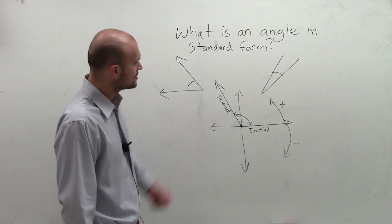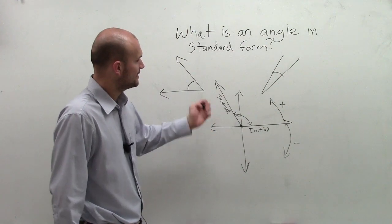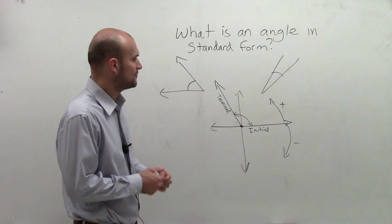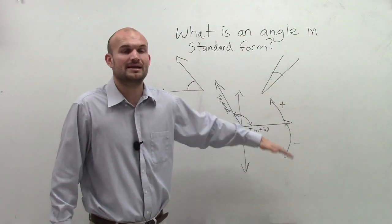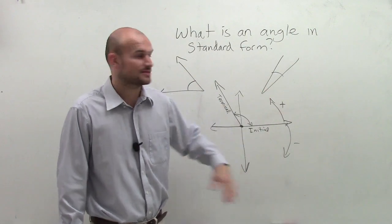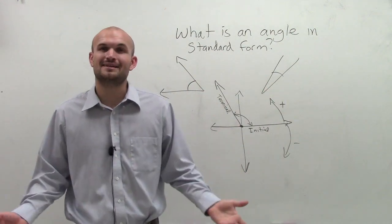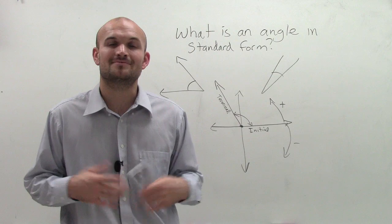All right? So we have initial and a terminal side. That is going to be your standard form. Just make sure you know when the direction might change your angle from being a positive direction or a negative direction. So that's standard form of an angle. Have any comments or questions, please let me know below. Thanks.